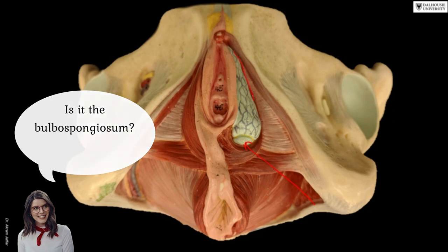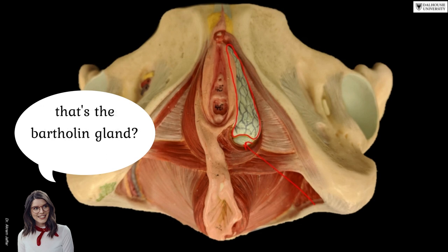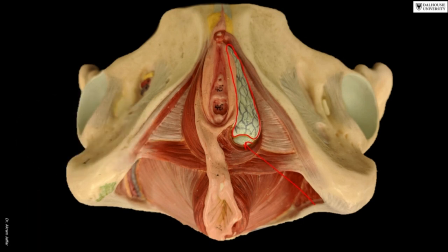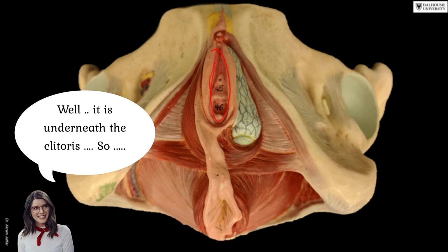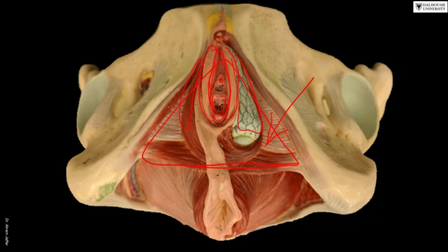This structure is the bulb of the vestibule, and that is the Bartholin's gland, also called the greater vestibular gland because it is closely related to the bulb of the vestibule. The vestibule is the area surrounded by the labia minora — the common opening for the urethra and vagina. In the female there are two bulbs of the vestibule, unlike in the male. Behind is the pelvic diaphragm, and the urogenital diaphragm closes its anterior deficiency.